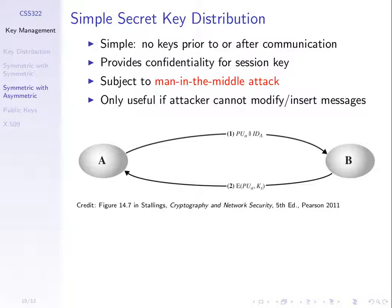What B does is encrypt the secret Ks using the public key of A, so that if someone intercepts message number two, they need the private key of A to decrypt and get Ks. Without the private key of A, they will not be able to learn Ks — and only A has the private key of A. So B sends this encrypted message back, A receives it, decrypts using the private key of A, and learns Ks. From then on, they use Ks with a symmetric key cipher.